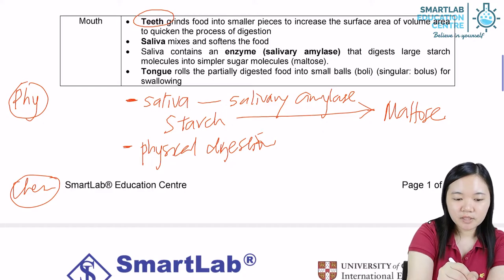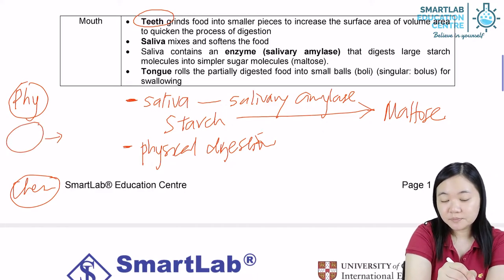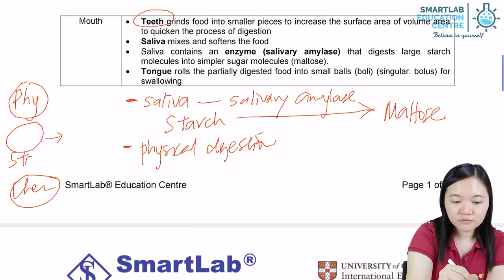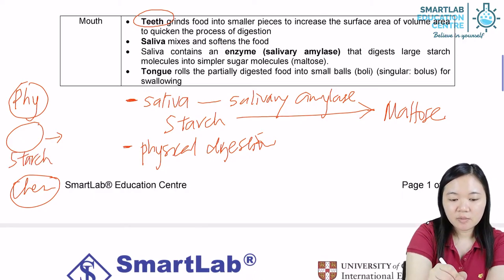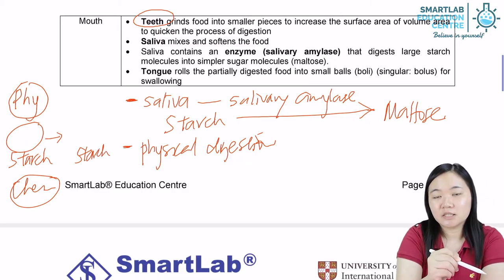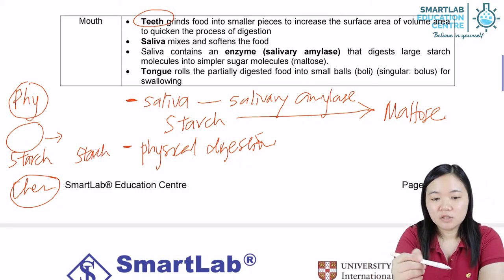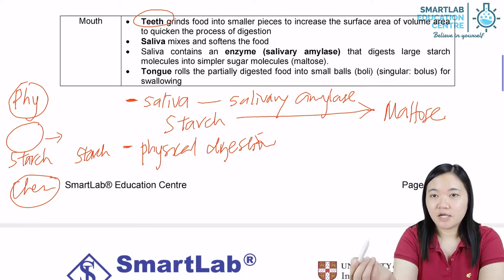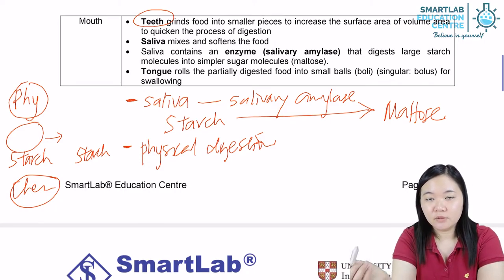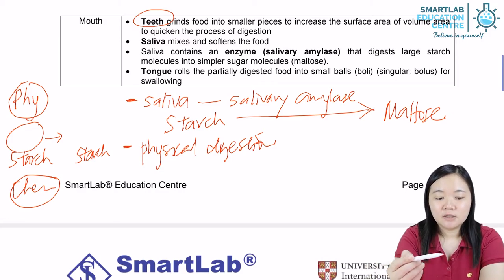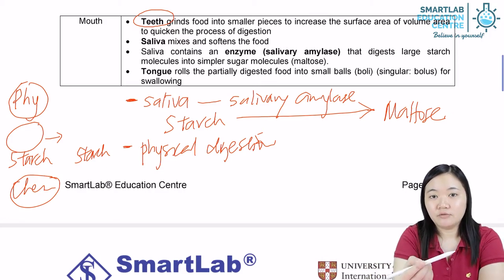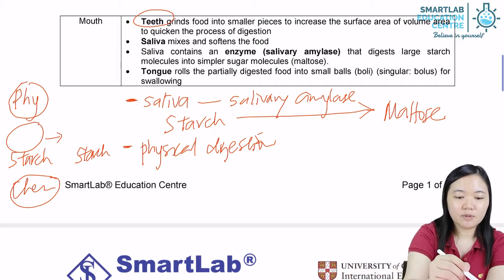In physical digestion, when I digest starch physically, it starts off as starch but ends up with the same identity — starch. For example, we start off with Kelvin, and after digestion you still have Kelvin. In chemical digestion, you start off with Kelvin and you end up with 'kel' and 'win' — the identity changes.